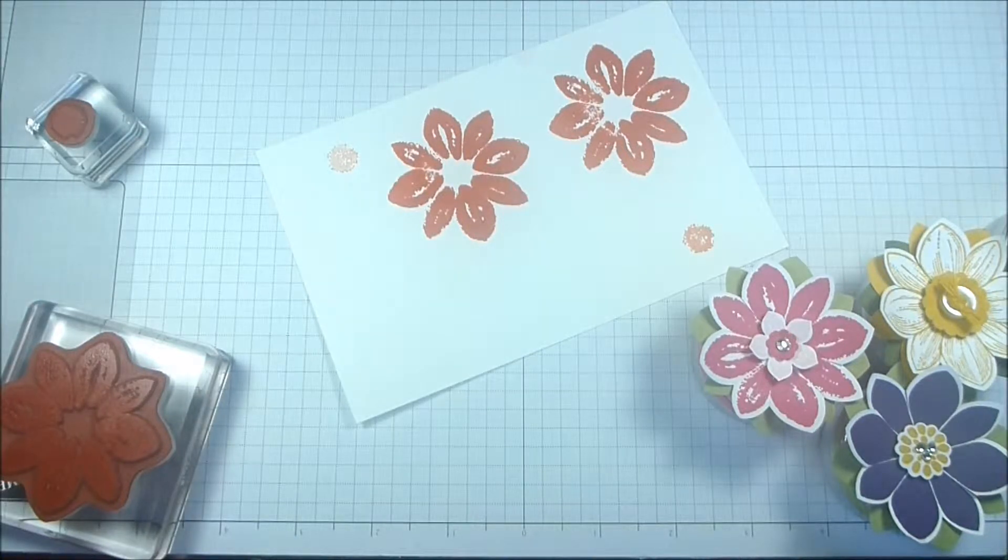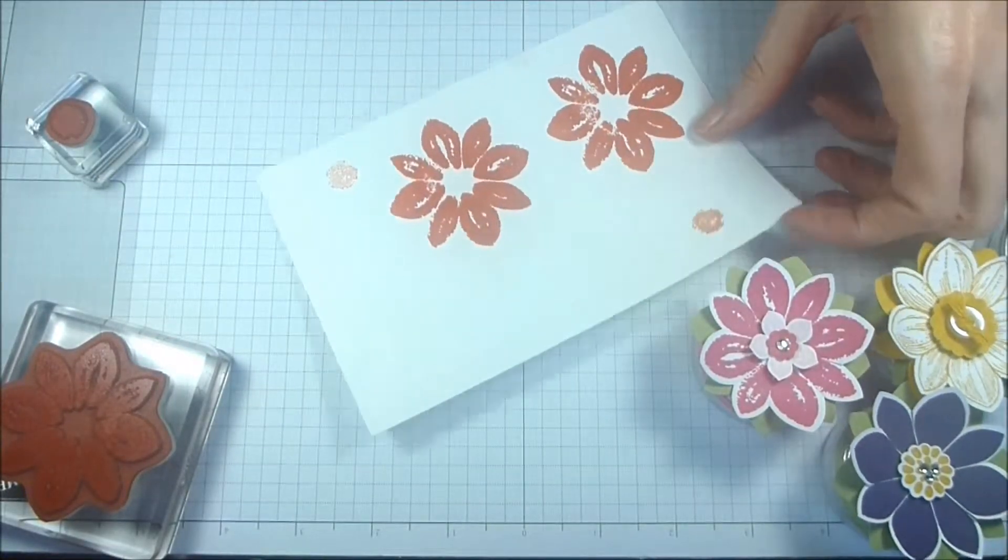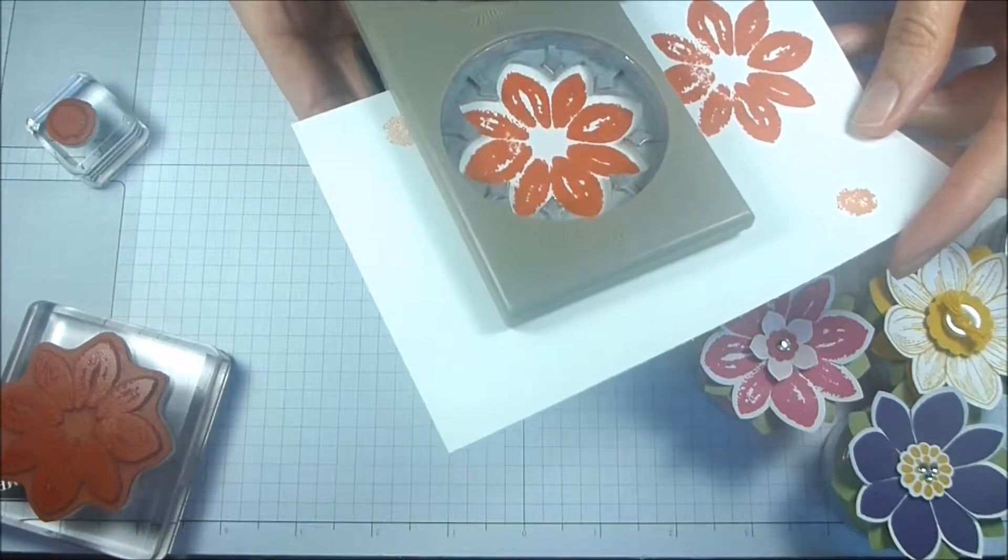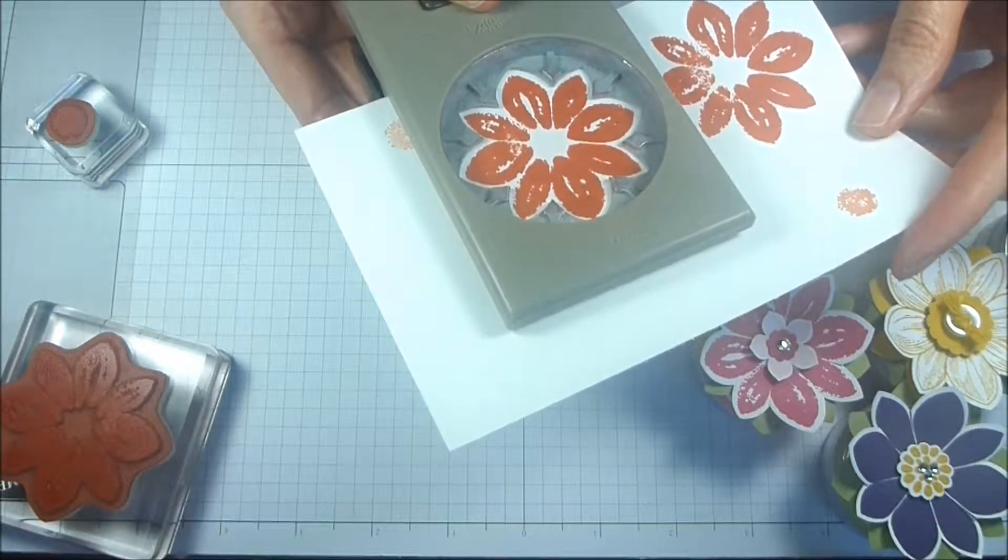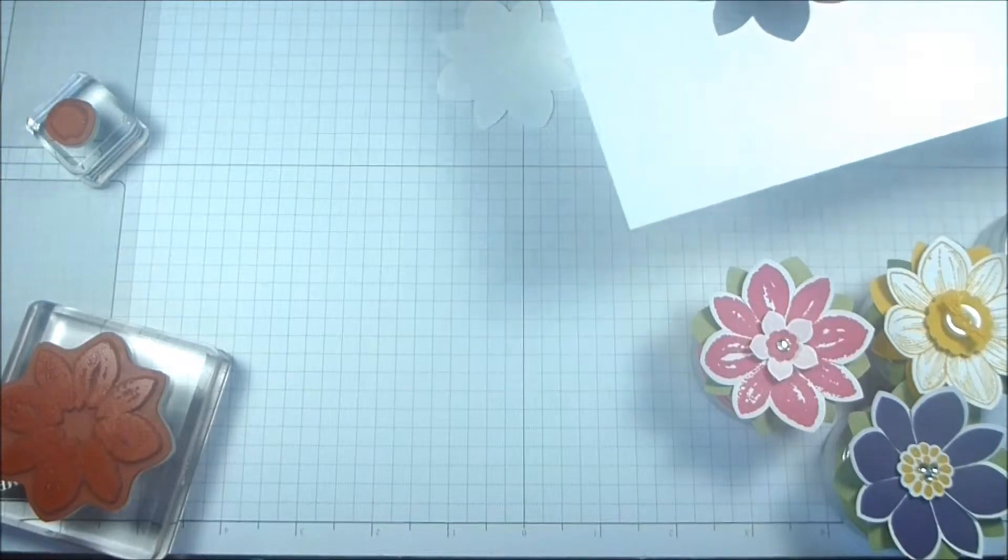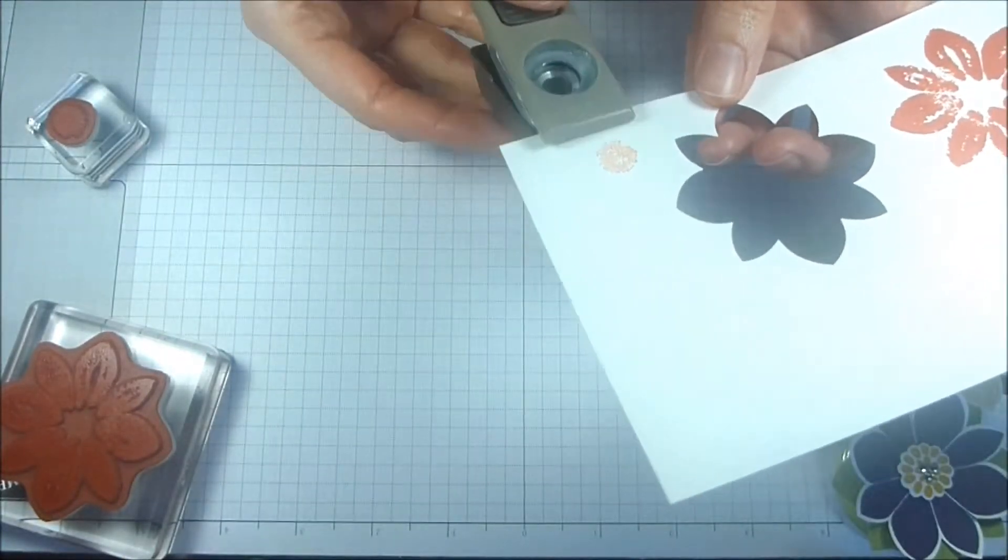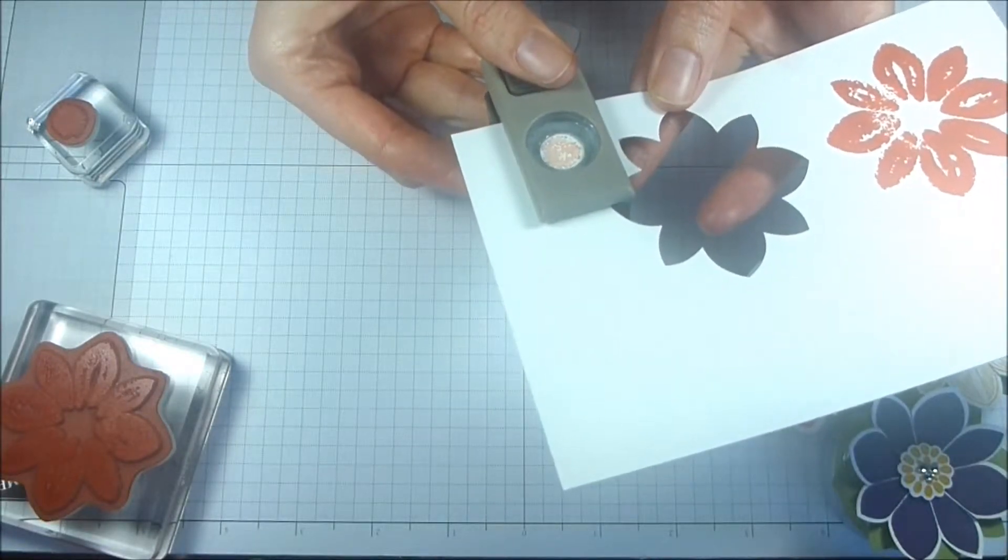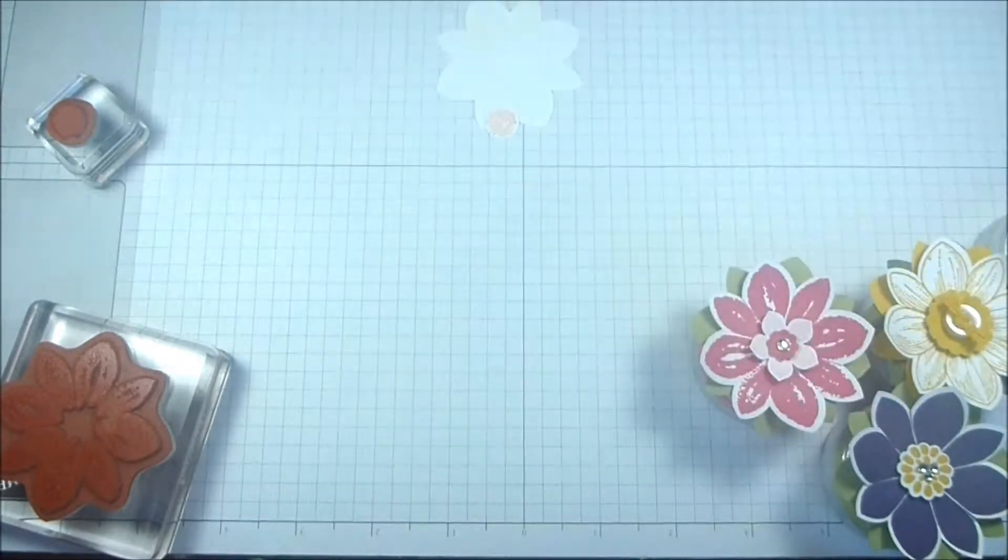So now we need our punches, which we'll be using this one that matches for the flower. Oh good, it didn't fly everywhere. And then for the little center of the flower, it's the half inch circle punch that works out just perfect. It was flying at me.